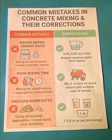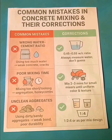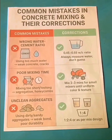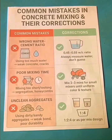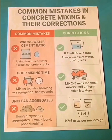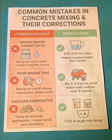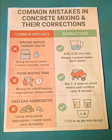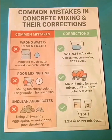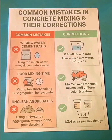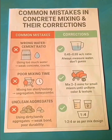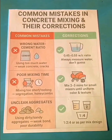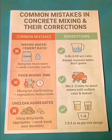Mistake number two: poor mixing time. This will occur when mixing too short or too long, which leads to segregation and uneven concrete. To correct this, mix 2 to 3 minutes for smaller mixes until uniform color and texture is formed.